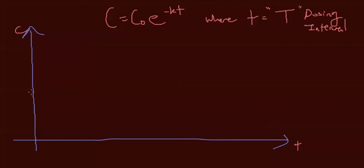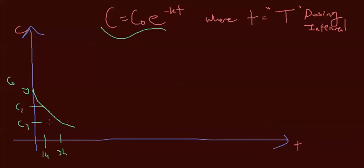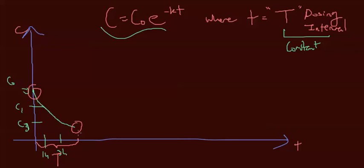Let me draw the graph for an IV bolus shot. C0 is here, and for the midterm we assumed t could be anything — so at one hour C was at that point, at three hours C was at that point. When we replace little t with big T, we make it a constant — the dosing interval. The dosing interval is the time from the start of one dose to the start of the next; that's constant. So we can rewrite: C = C0 * e^(-K * big T).